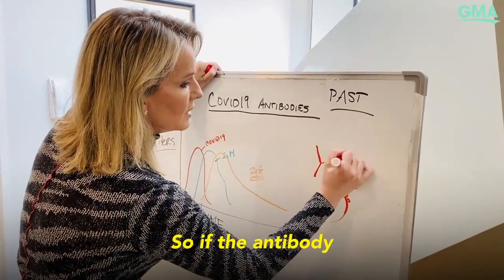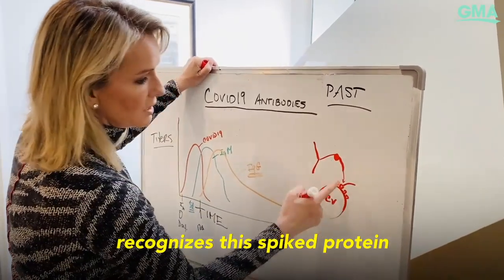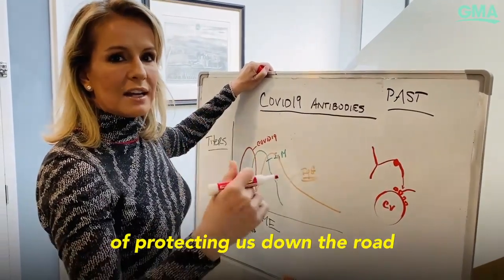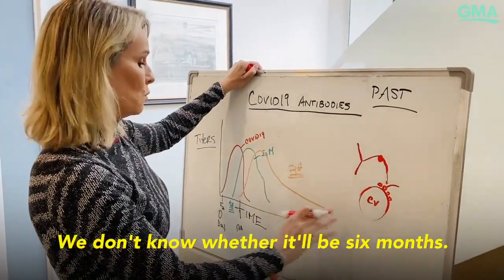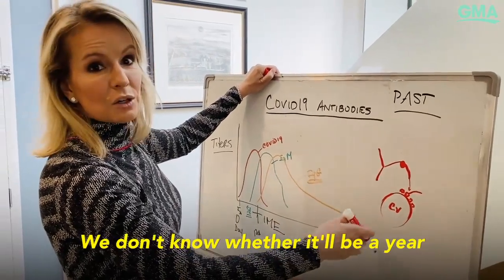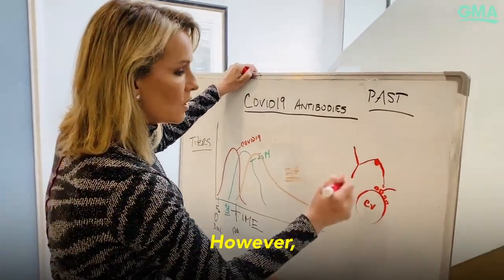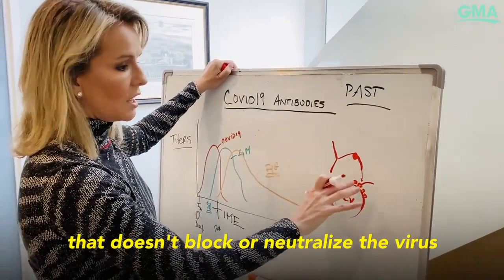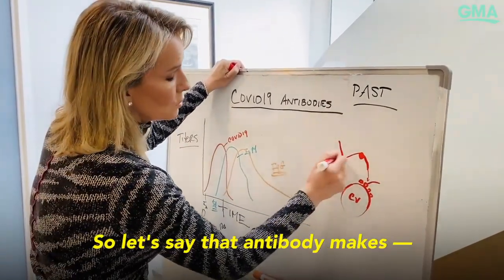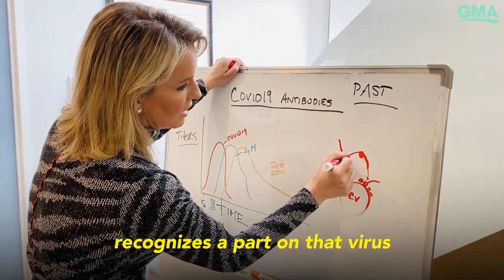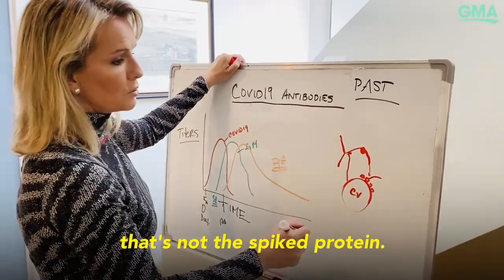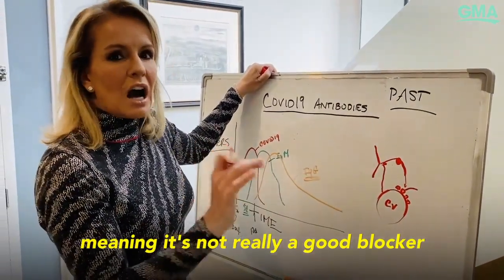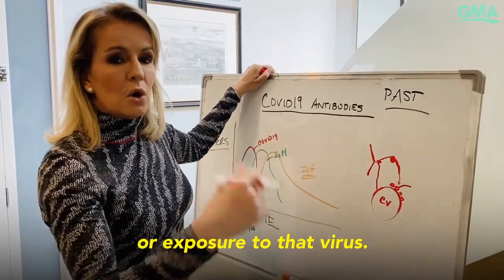If the antibody recognizes this spike protein, then we call that high affinity, and that has a greater chance of protecting us down the road for some period of time. We don't know whether it'll be six months, a year, or possibly even more than a year. However, your body can still make an antibody in response to coronavirus that doesn't block or neutralize the virus, so you can still be infected again. If the antibody recognizes a part of the virus that's not the spike protein, that may be a low affinity antibody — not a good blocker or neutralizer of future infection or exposure to that virus.